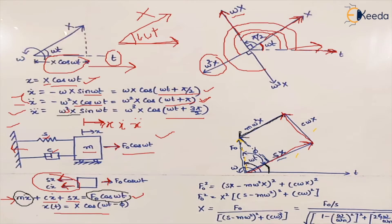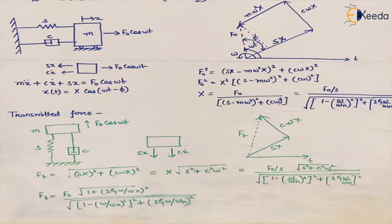Expanding and factoring out x², we get the amplitude: x = F₀ / √[(s − mω²)² + (cω)²]. Dividing through by s gives the standard form involving (ω/ωₙ)². This x is the magnitude of the displacement resulting from the applied force.